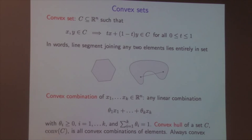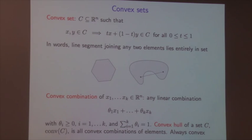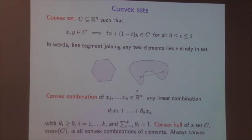A convex set C has the property that for any two points X and Y in C, the line segment joining them lies entirely in C. That is, for any t between 0 and 1, tX + (1−t)Y must lie in C. Pictorially: a non-convex set has a line segment that leaves the set, while a convex set contains all such line segments.